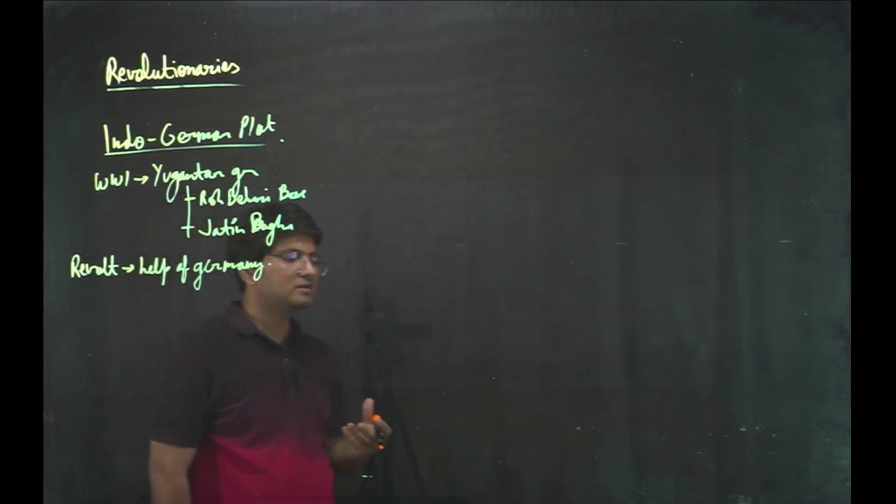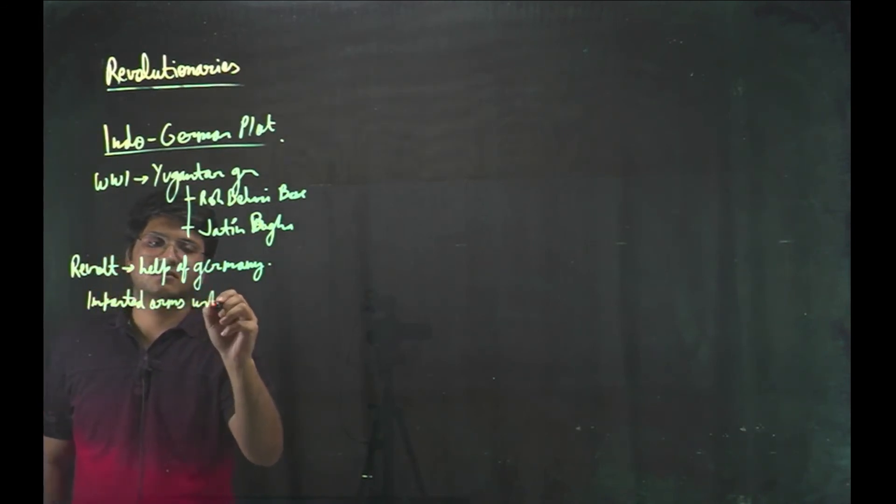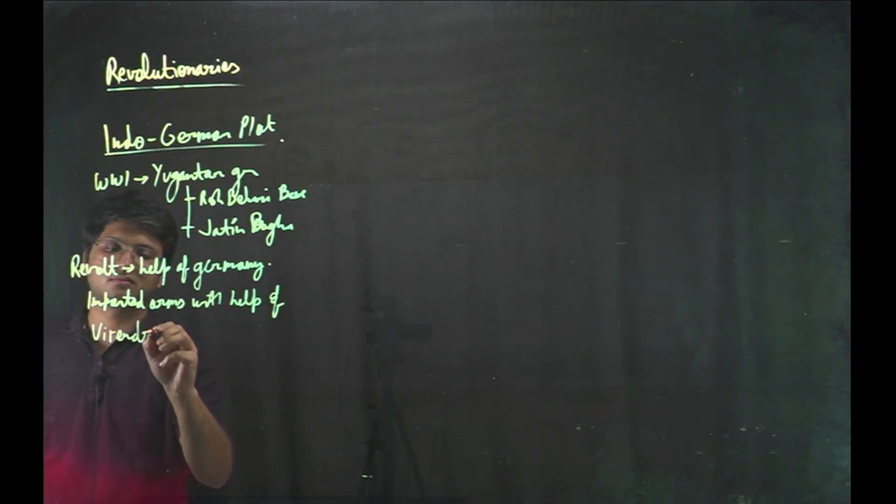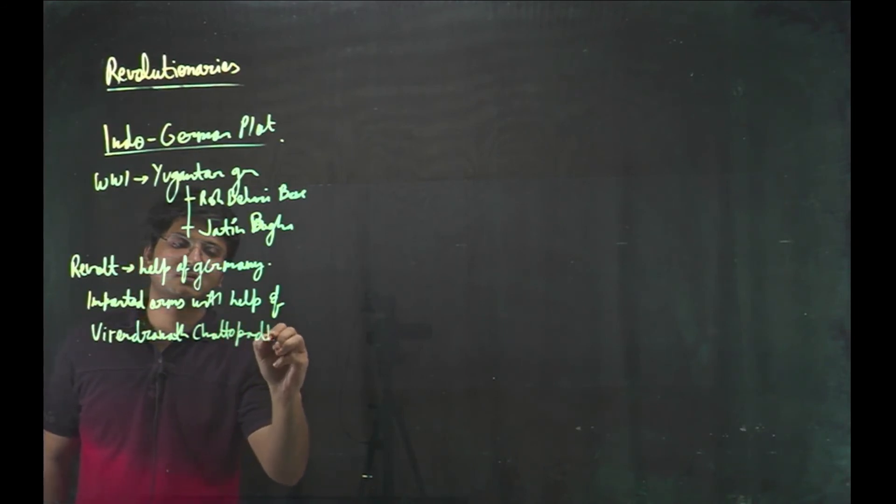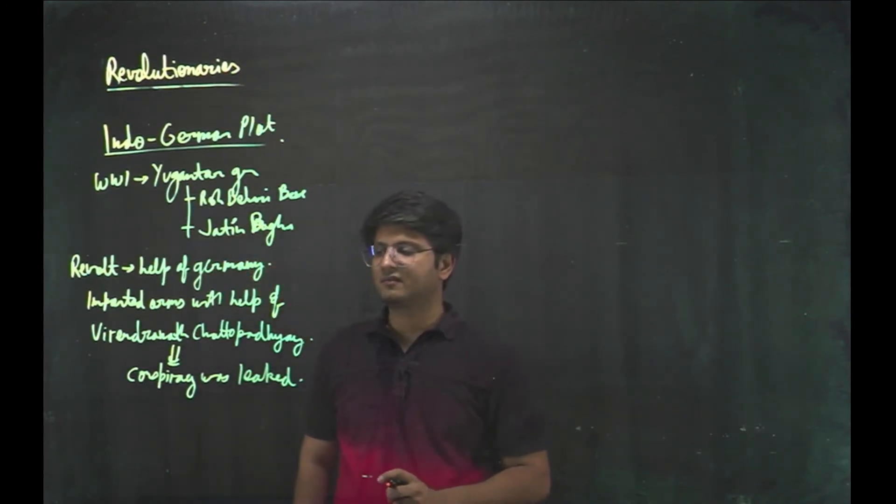Virendranath Chattopadhyay. For this, they imported the arms and ammunitions from Germany. Especially Virendranath Chattopadhyay imported arms. But this whole conspiracy was leaked. And later on, Bagga Jatin died fighting in a gun fight.